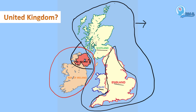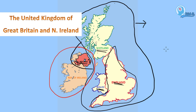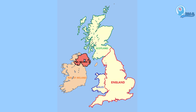So United Kingdom consists of four countries: Scotland, England, Wales and Northern Ireland. Therefore, the full name of United Kingdom is the United Kingdom of Great Britain and Northern Ireland. All four countries have the same passport in the name of United Kingdom.